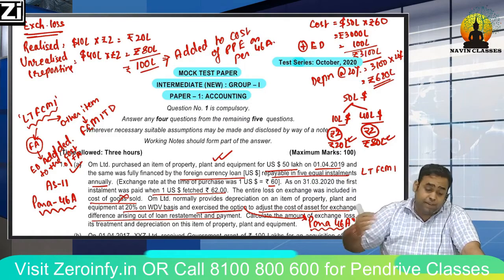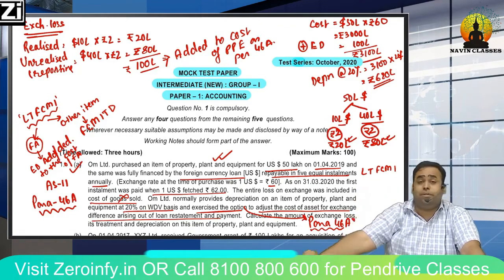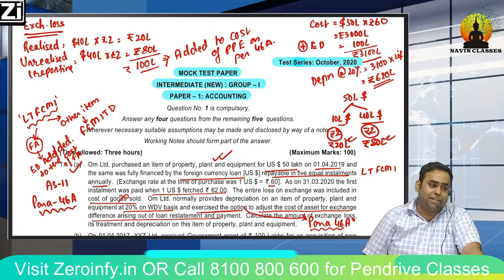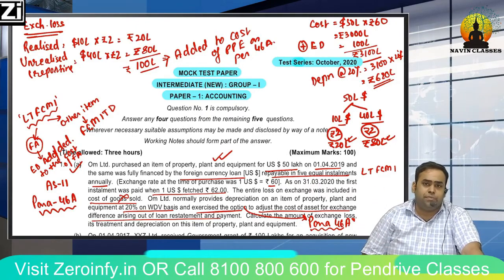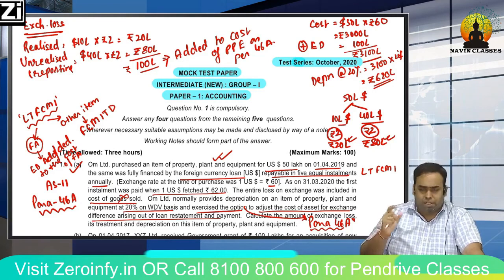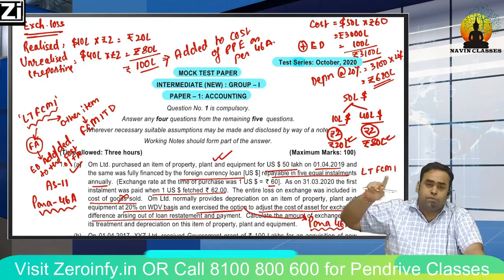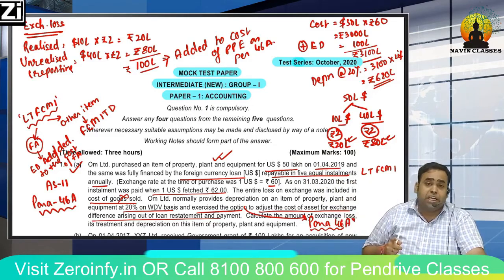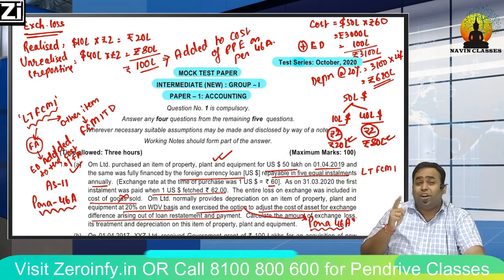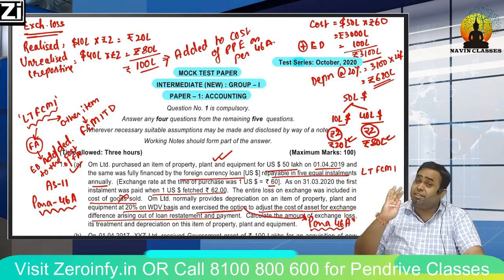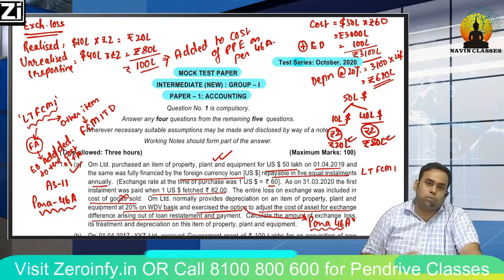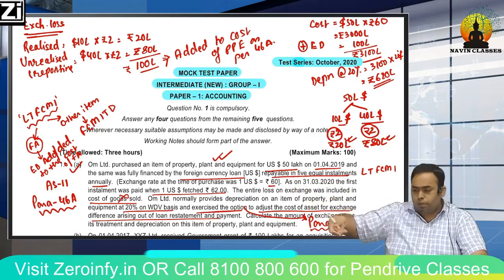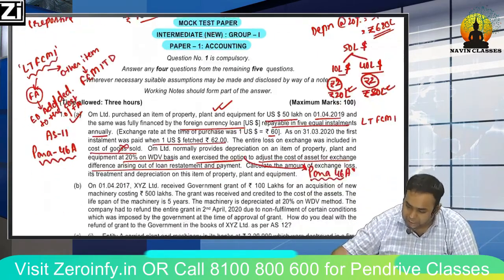Many students are confused about whether to study Para 46A or leave it — the mock test gave it as the very first question! Read it once thoroughly; it's a simple concept. The key points: exchange difference related to purchase of a depreciable PPE can be added to the cost of property, plant and equipment. Once the option is exercised it cannot be revoked. This fact must be disclosed in notes to accounts.